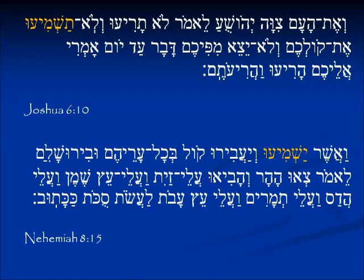In Nehemiah 8:15, here is the third person plural. The people have been listening to the Torah and have just rediscovered Sukkot. They are commanded to announce and proclaim in all their cities and in Jerusalem about the rules for Sukkot. So we have: v'asher yashmiu — they should announce, they should make it known — v'ya'aviru kol. This is also a Hifil, 'cause to carry,' so that their voice would be carried in all their cities, bachol arehem.